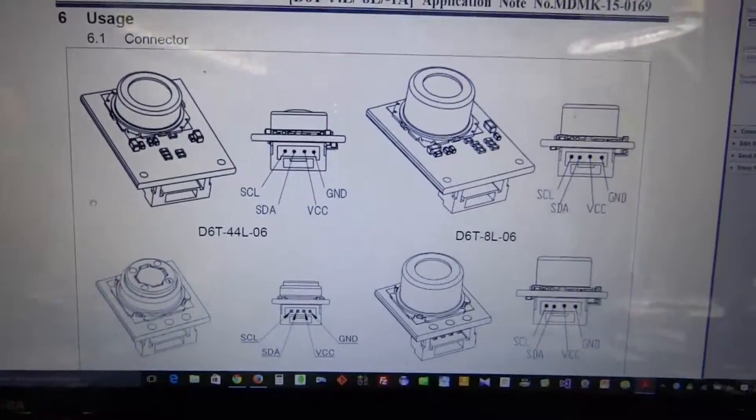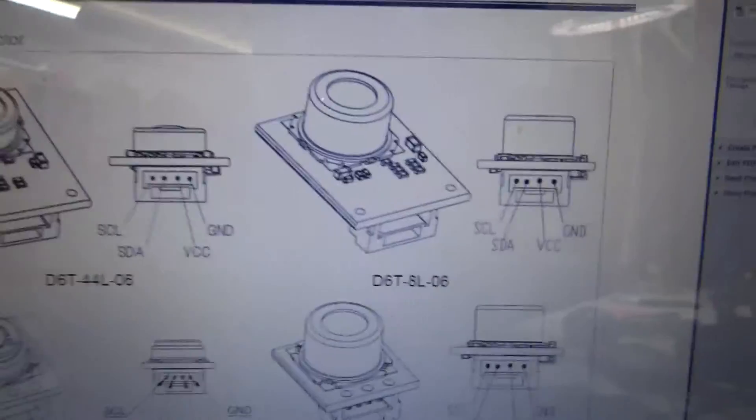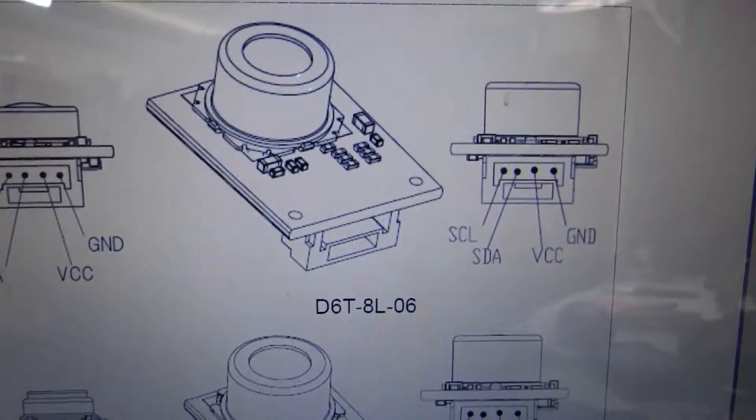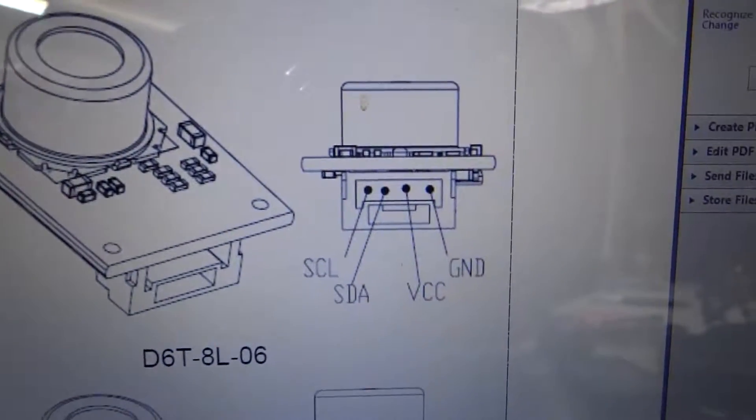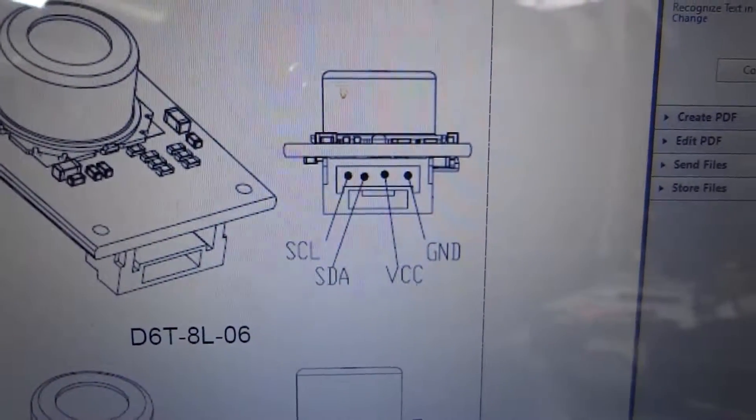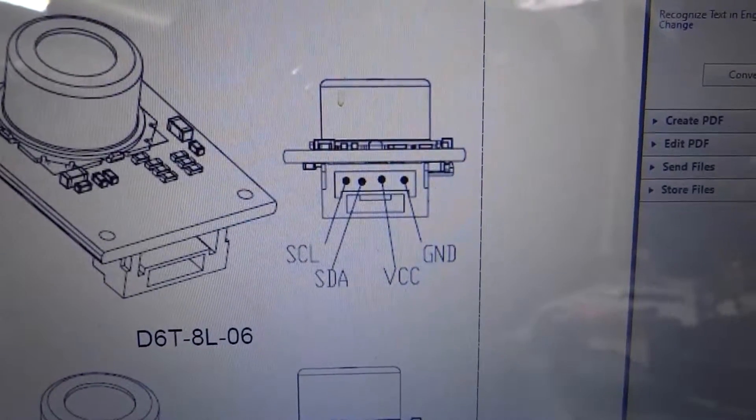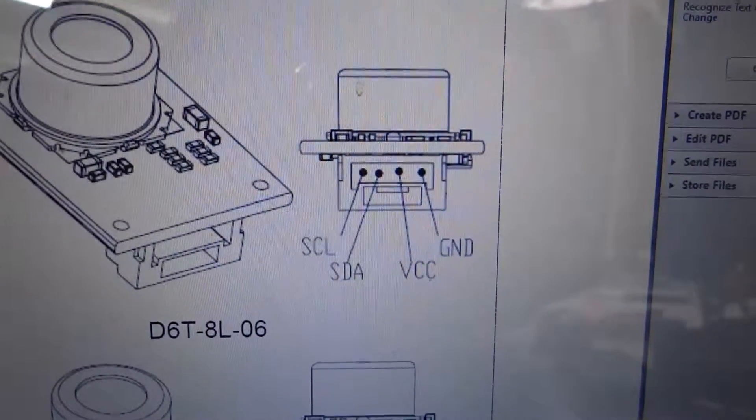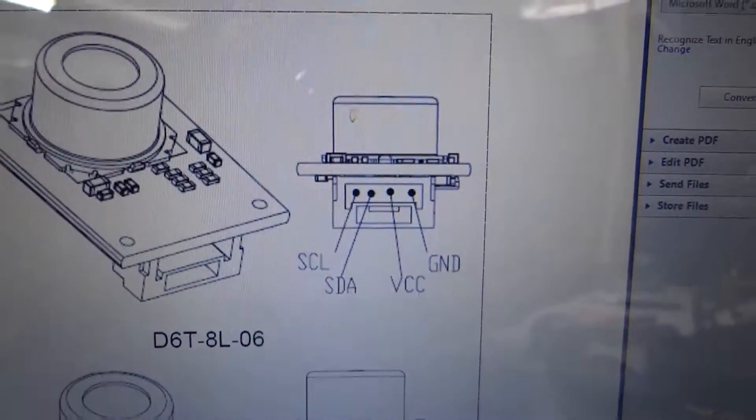Okay, so here's the wiring for the sensor. We're working with this 8L06. You can see the connector on the bottom side. The pin on the far left is SCL, then SDA, then VCC, then GND. So that's how we're going to wire the connector up.